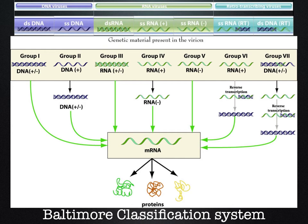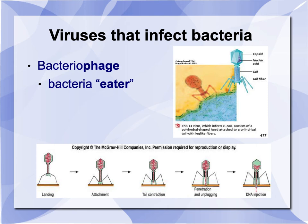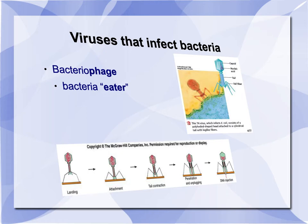Viruses have their own unique classification system called the Baltimore Classification System, named after a scientist who came up with the system, not the city. The most numerous viruses out there are called bacteriophages, which means bacteria eater, and they look like lunar landers.